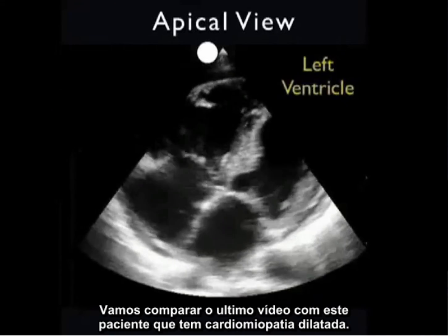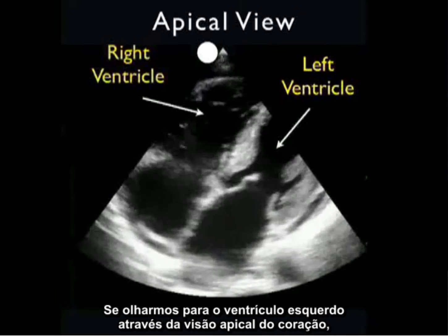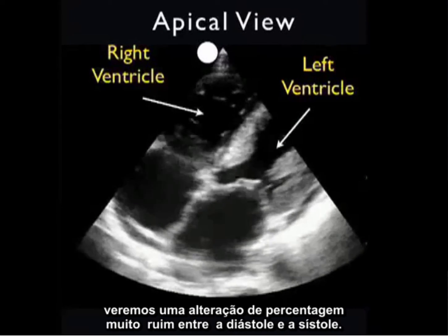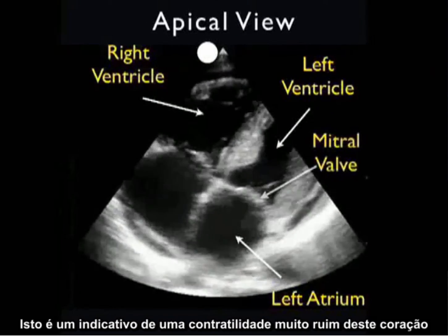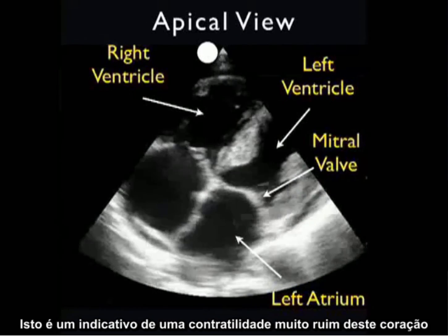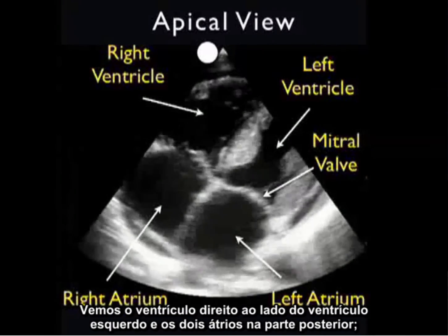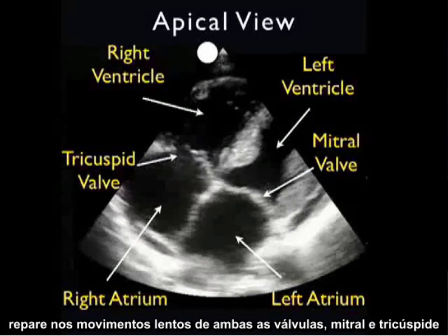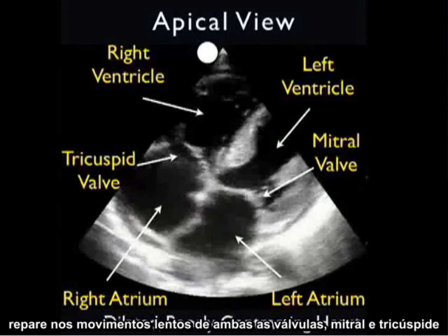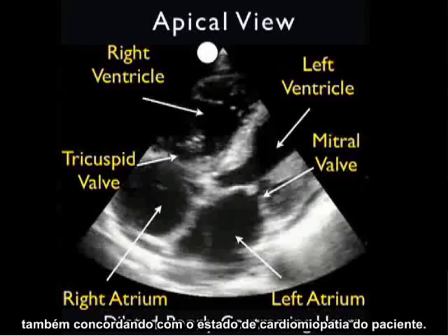Let's contrast that last clip with this patient who has a dilated cardiomyopathy. As we look at that left ventricle from the apical view, we see a very poor percentage change from diastole through systole. This is indicative of a very poor contractility of this heart. We see the right ventricle to the side of the left ventricle and the two atria posterior. Notice the sluggish movement of both the mitral valve and the tricuspid valve. We see a little bit of pericardial effusion — that little black rim around the heart — also consistent with this patient's cardiomyopathy status.